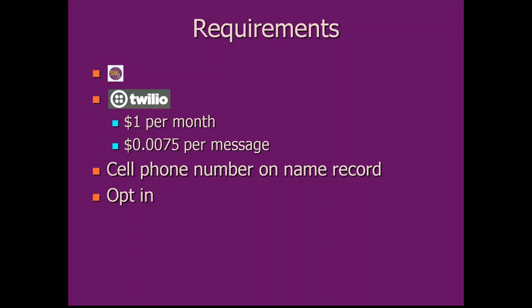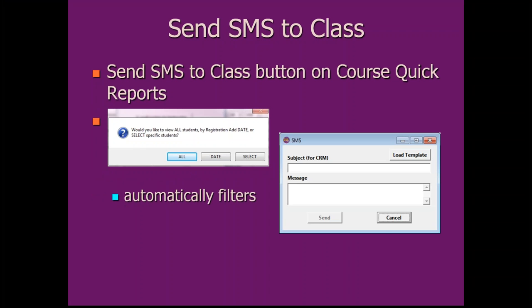Now that we've covered requirements and setup, let's look at what you can do once people are opted in to text messaging. One of the first things is being able to send a text message to an entire class — there's a brand new button on the Course Quick Reports area.